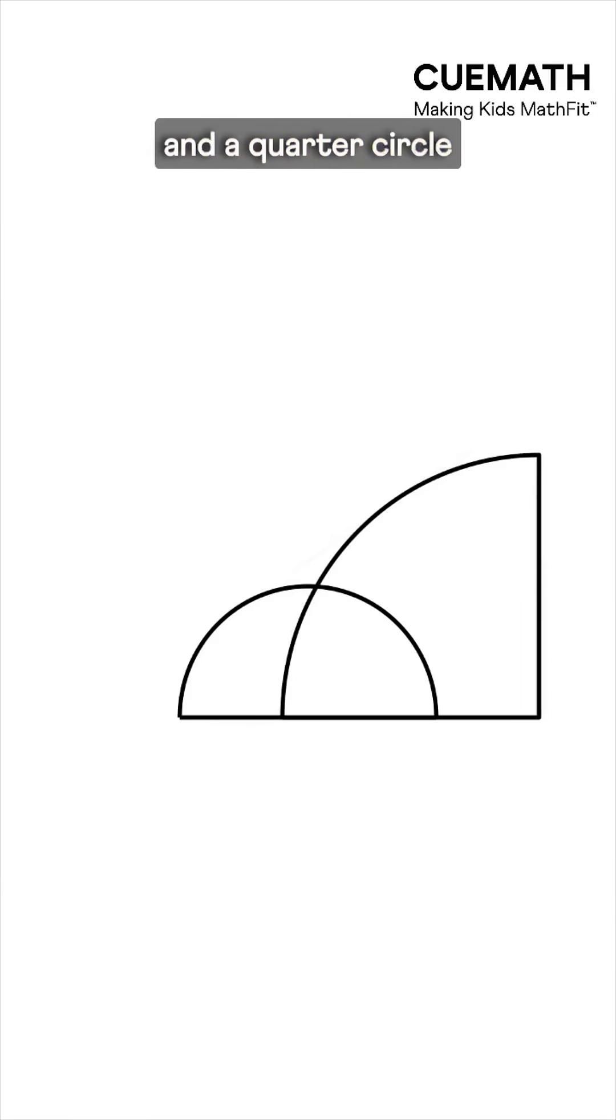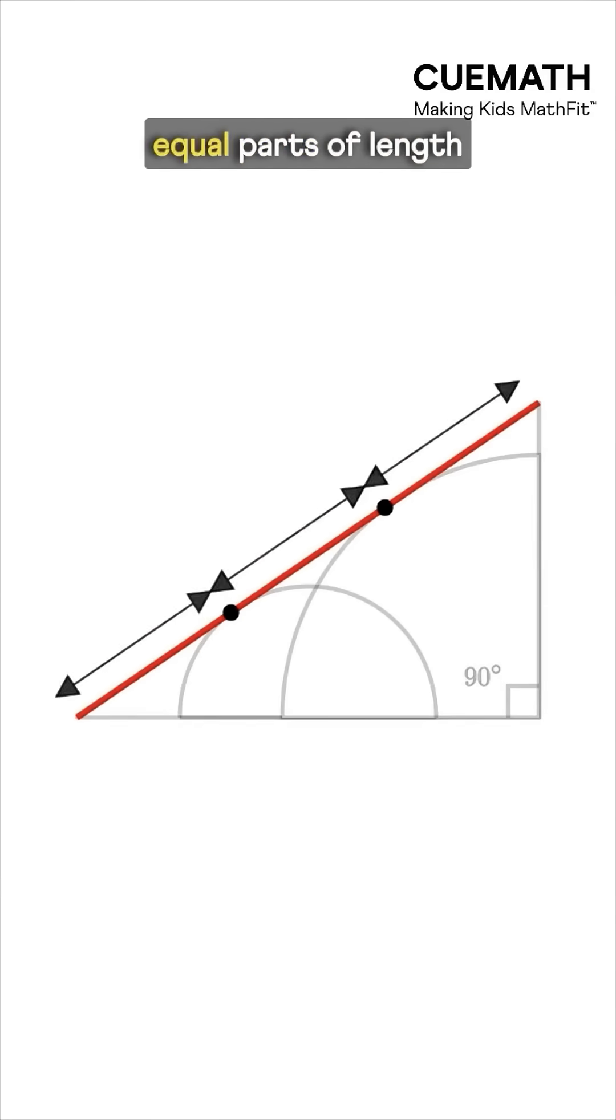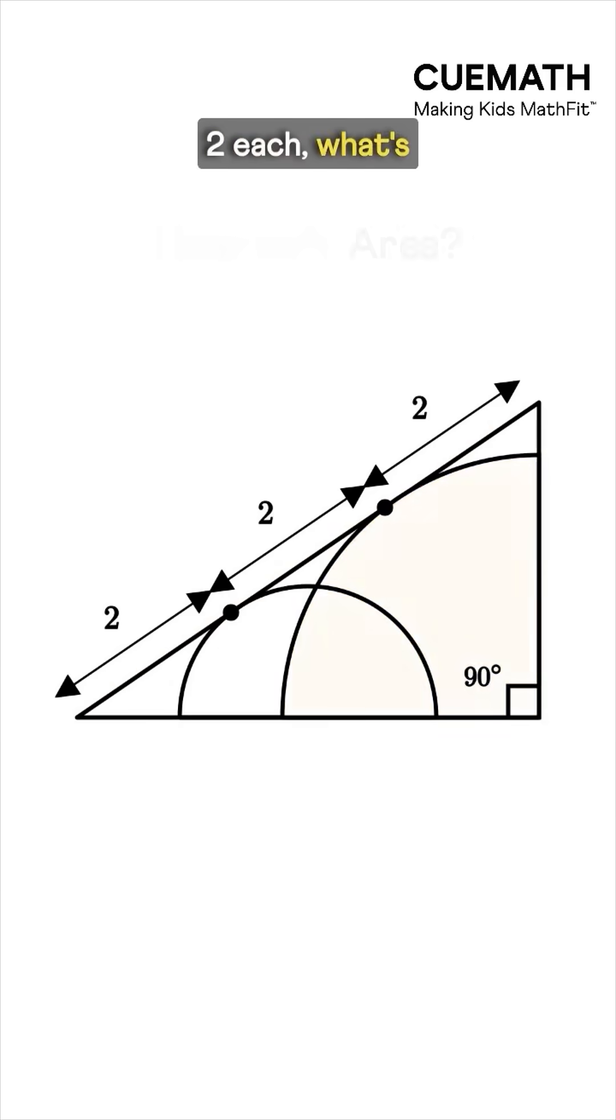A semicircle and a quarter circle are arranged inside a right triangle. If this side is divided into three equal parts of length 2 each, what's the area of the quarter circle? Let's see.